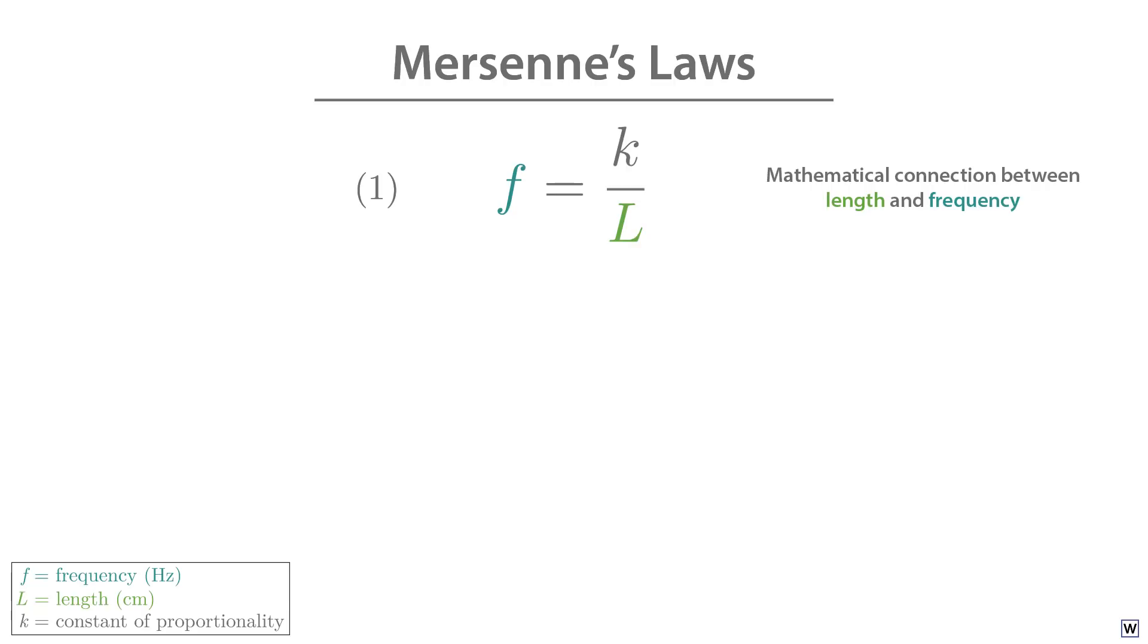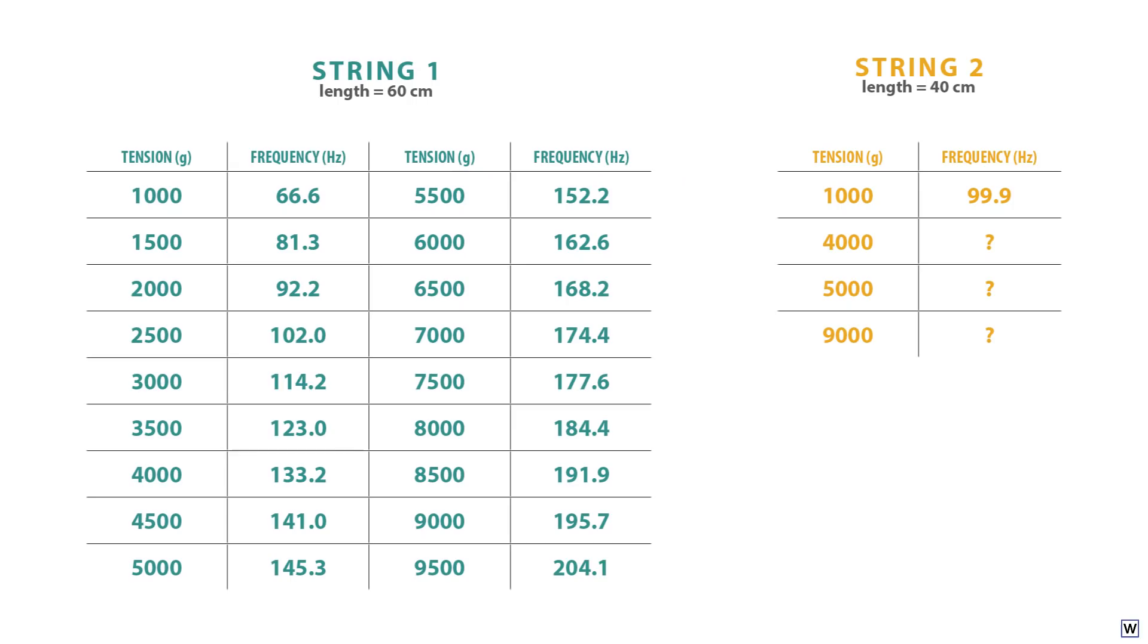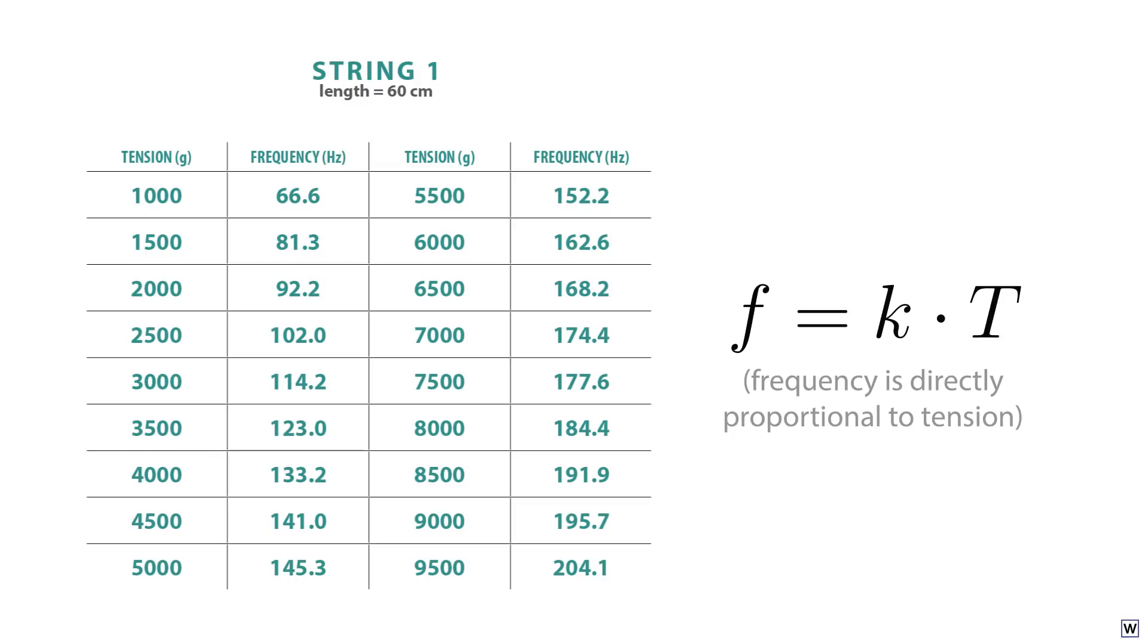Last time, we left off trying to figure out Mersenne's final two laws. Let's start with the connection between the tension and frequency of a vibrating string. Unlike our length and frequency relationship, tension and frequency seem to vary directly. When tension increases, so does frequency. A reasonable guess, then, might be that tension and frequency are directly proportional.